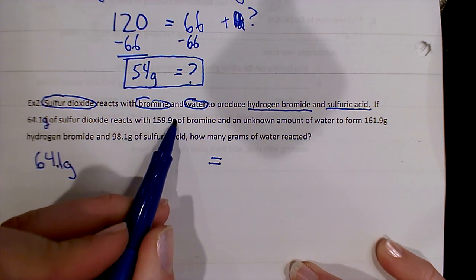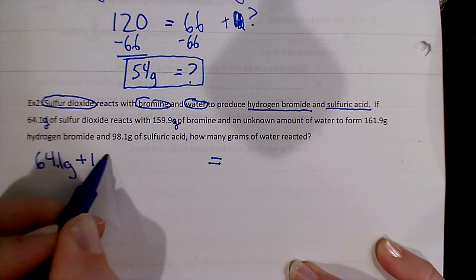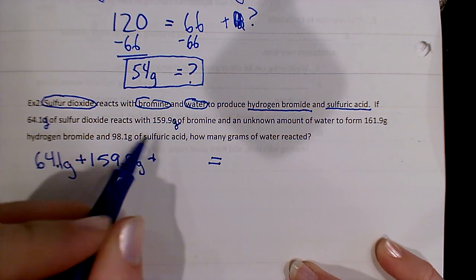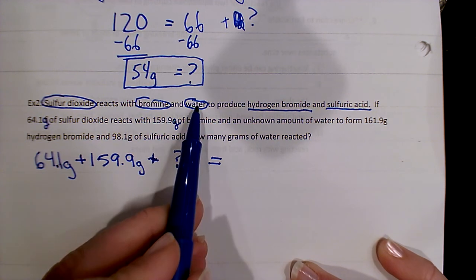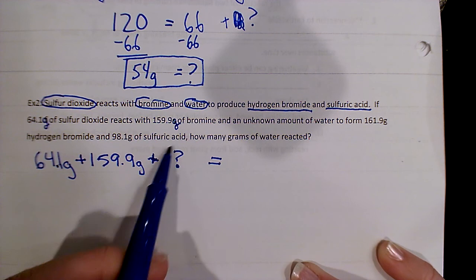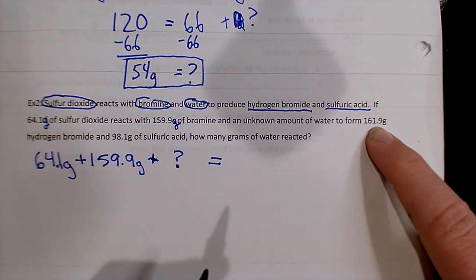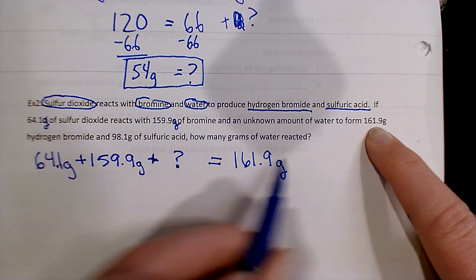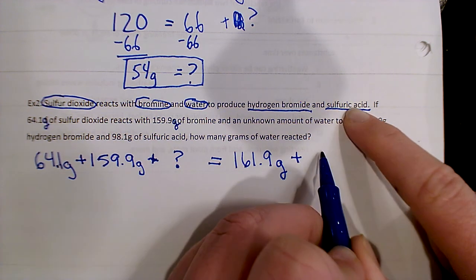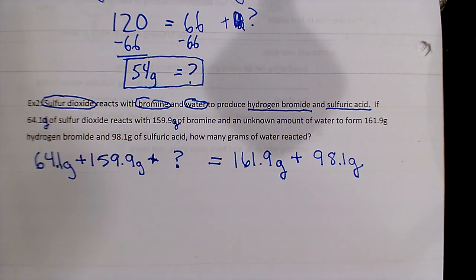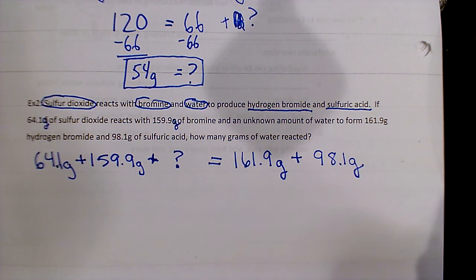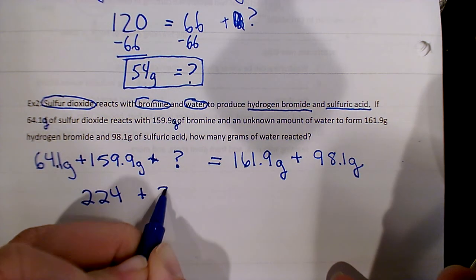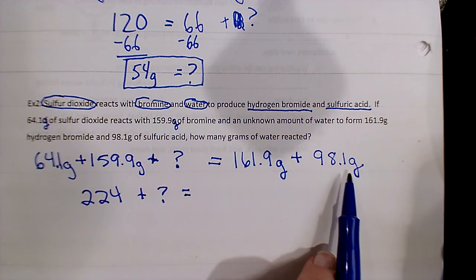So 64.1 grams of sulfur dioxide, so I'm going to put that 64.1 grams here, reacts with 159.9 grams of bromine, so I'm going to add that 159.9 grams, and an unknown amount of water. So this time the water, which is one of my reactants, is what I don't know. I don't know how much water reacted. But it formed 161.9 grams of hydrogen bromide, so that one's underlined, so I'll put it on the right, and 98.1 grams of sulfuric acid. And then I'm ready. I have everything known in my equation here. So I'm going to add the 64.1 plus 159.9, and that's 224, and my question mark is still there. And then I'm going to add the 161.9 to the 98.1.